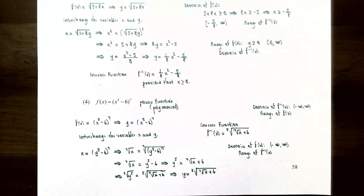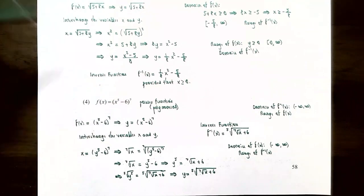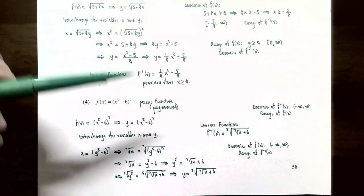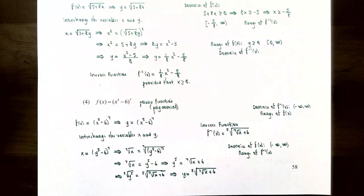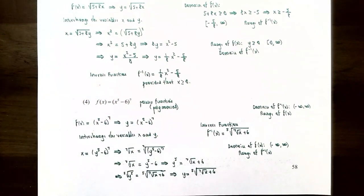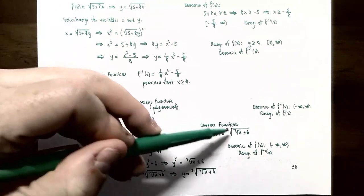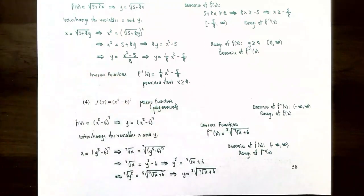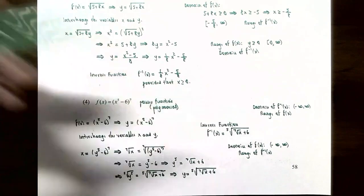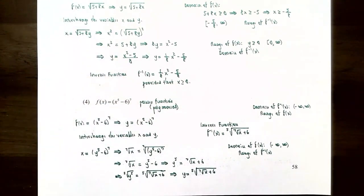Now let's talk about the domain and range. For f of x — a polynomial or power function — there is no division by zero and no even roots of negative numbers, so the domain is the set of all real numbers, negative infinity to infinity, which is also the range of the inverse function. For the inverse function, we have two odd roots — a fifth root and a seventh root — so again no restriction on the input. The domain of the inverse is also all real numbers, negative infinity to infinity, which is also the range of the original function f of x.